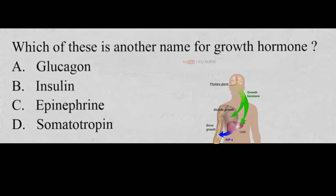Which of these is another name for growth hormone? A. Glucagon, B. Insulin, C. Epinephrine, D. Somatotrophin. And the correct answer is D, Somatotrophin. Growth hormone is also called somatotrophin or human growth hormone. It stimulates the growth of essentially all tissues of the body, including bone.